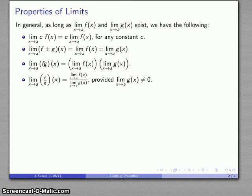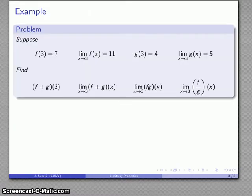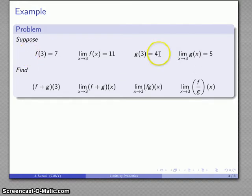Now we actually use these properties implicitly, but let's see if we can use them in a more explicit fashion. So let's consider the following problem. I have a function value, a limit, the value of another function, and the value of the same limit. I know absolutely nothing about the functions other than these four facts, but just given this very small amount of information I can find other things like function values and a whole bunch of limits.